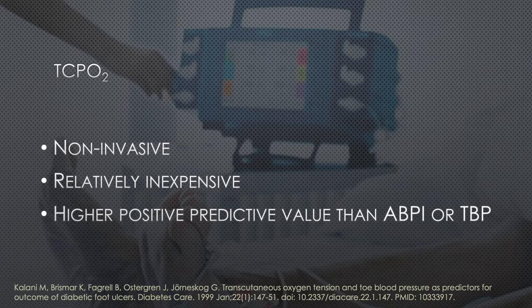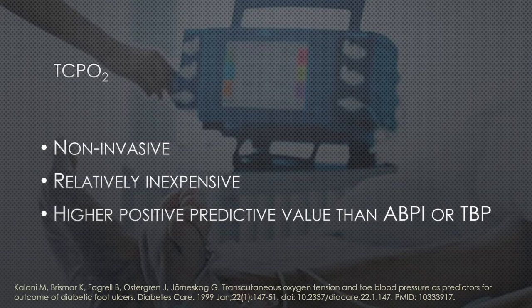Transcutaneous oxygen pressure (TcPO2) measures the amount of oxygen that diffuses through the skin in an area adjacent to an ulcer. The test is non-invasive, relatively inexpensive, highly repeatable, and has a higher positive predictive value than ankle brachial pressure indices or toe brachial pressure. The sensitivity and specificity for TcPO2 were 85 and 92 percent respectively when a cutoff level of 25 mmHg was used for determination of outcome of ulcer healing in diabetic foot ulcers.